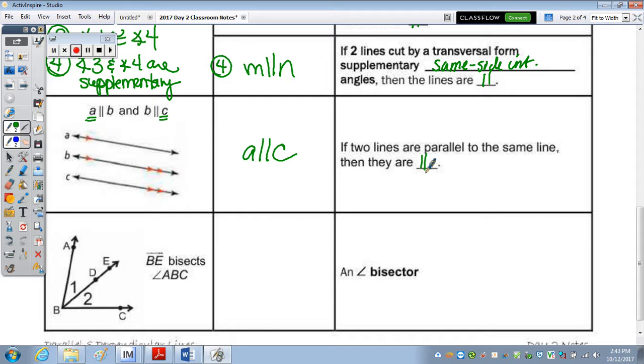And the last one, if BE is a bisector, what can we conclude? Yes, angle 1 is congruent to angle 2, because an angle bisector divides an angle into two congruent angles.